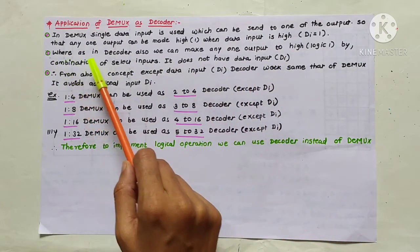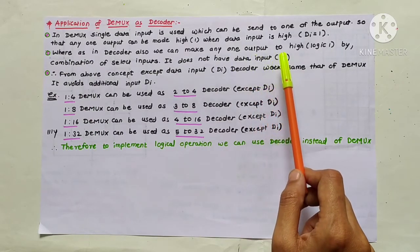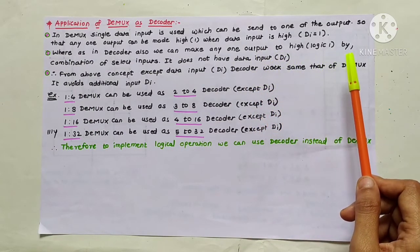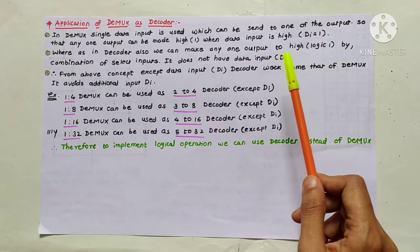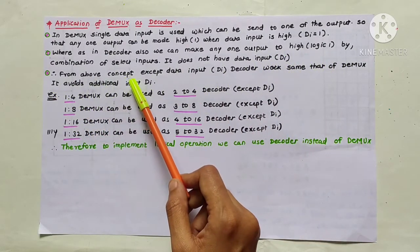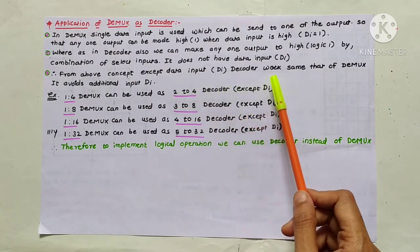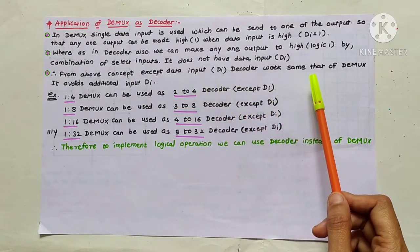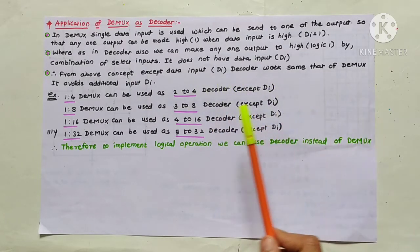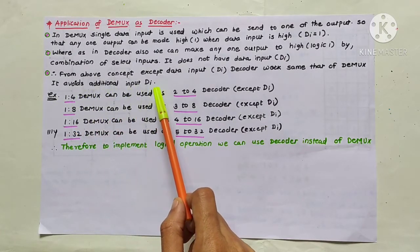In the decoder circuit we have BCD input, and that BCD input is converted into its equivalent decimal form. Therefore, except for the data input DI, the decoder works the same as the demultiplexer, but it avoids the additional data input DI.